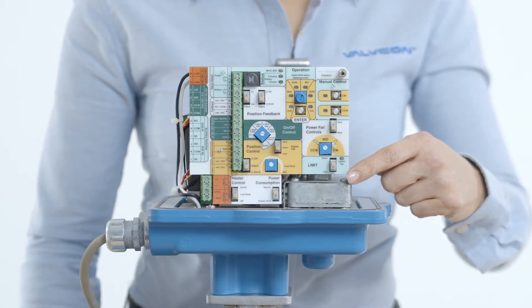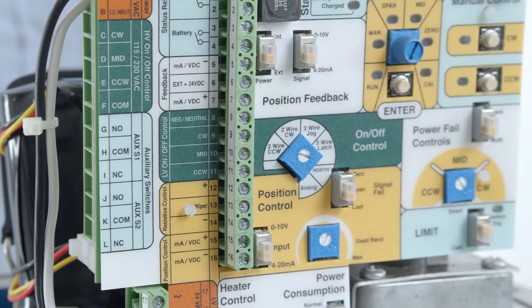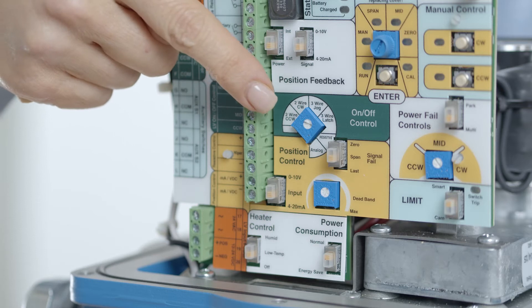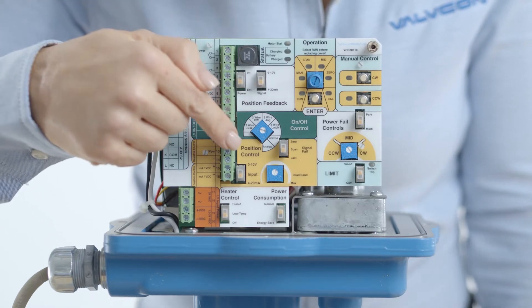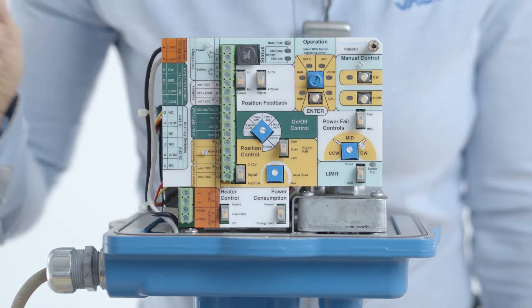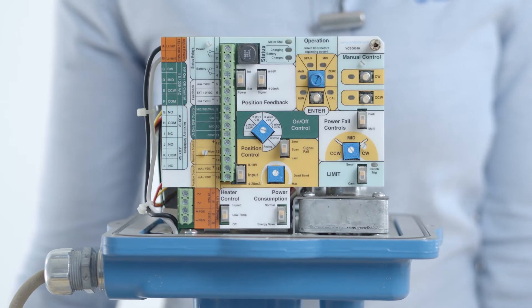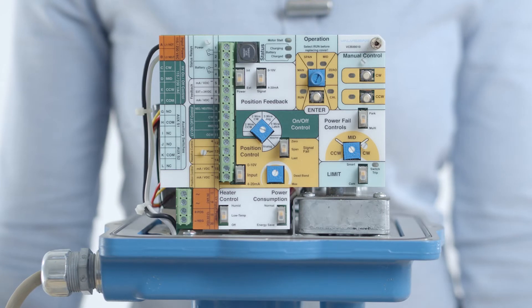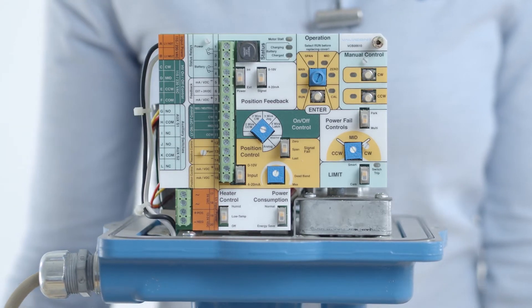The board includes the familiar Valvecon set and go calibration user interface with slide switches, push buttons, and selection potentiometers. The board can be configured for either two-wire or three-wire on-off control. The on-off section is the same dark green color as the wiring terminals. The position control section allows for using 4 to 20 milliamps or 0 to 10 volts DC analog or a resistive control signal such as 0 to 135 ohms.